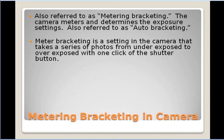Meter bracketing is a setting in the camera that takes a series of photos from underexposed to overexposed with one click of the shutter button. You compose your shot in the frame, push down the shutter button, and it will take three or sometimes five images in succession — one underexposed, one normal exposed, and one overexposed, or any other variety. I found out that it was so dark outside when I was doing my video that it actually detected it couldn't take the third exposure, and it only took two.